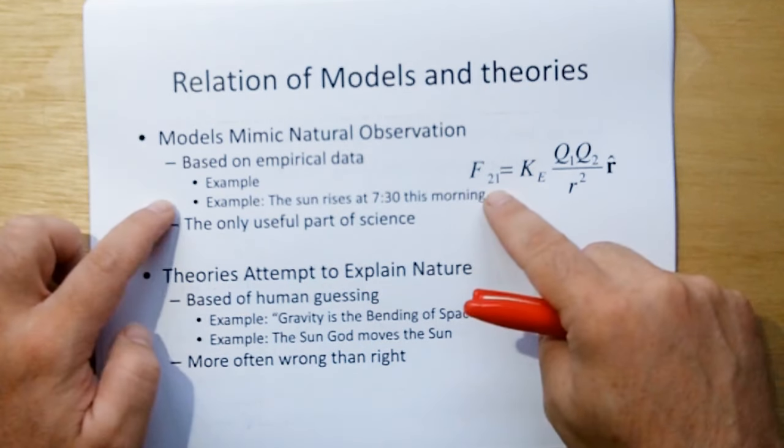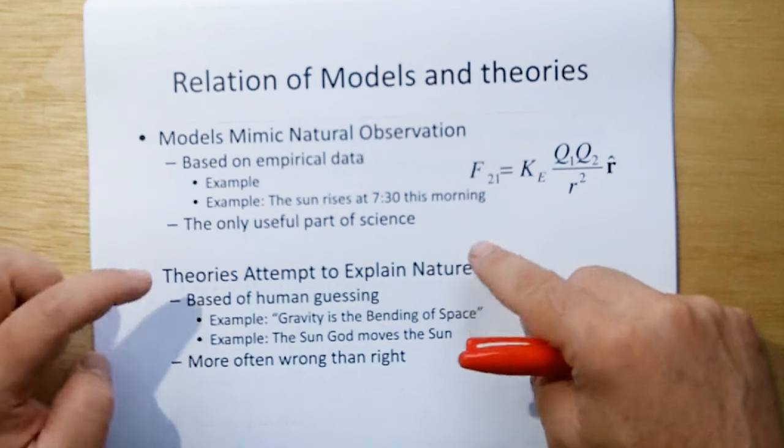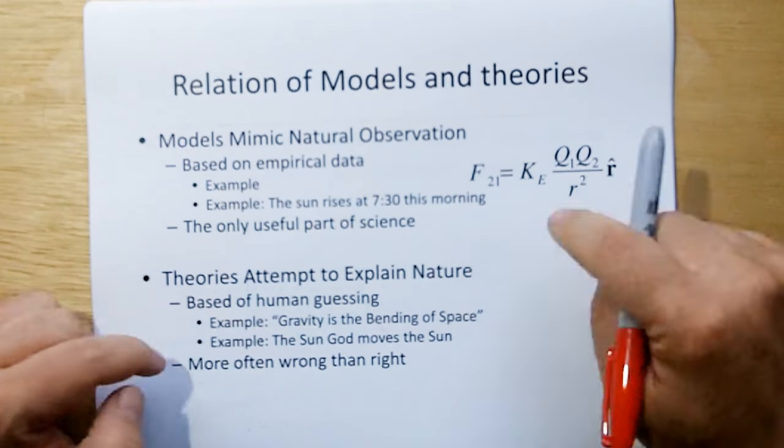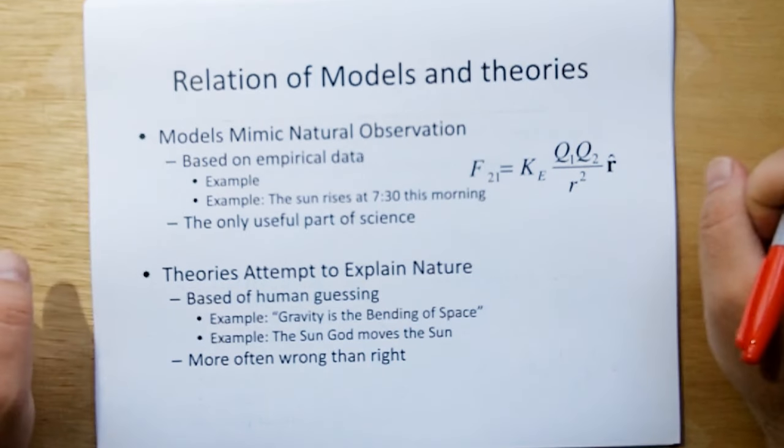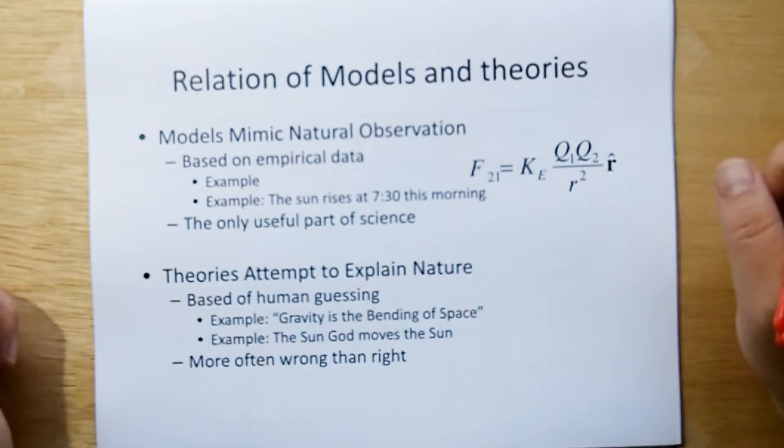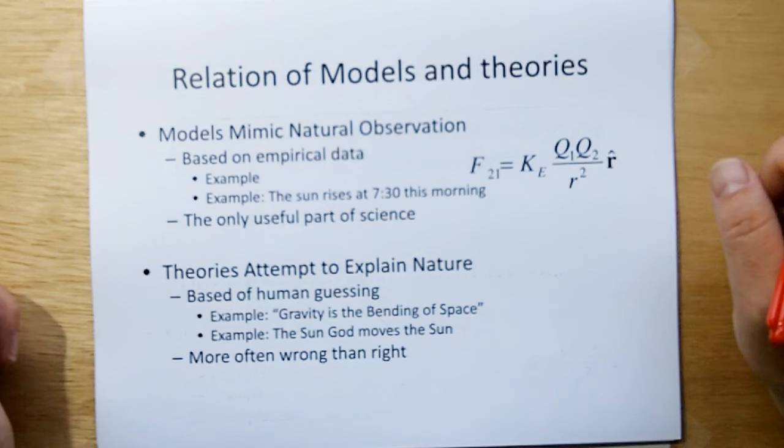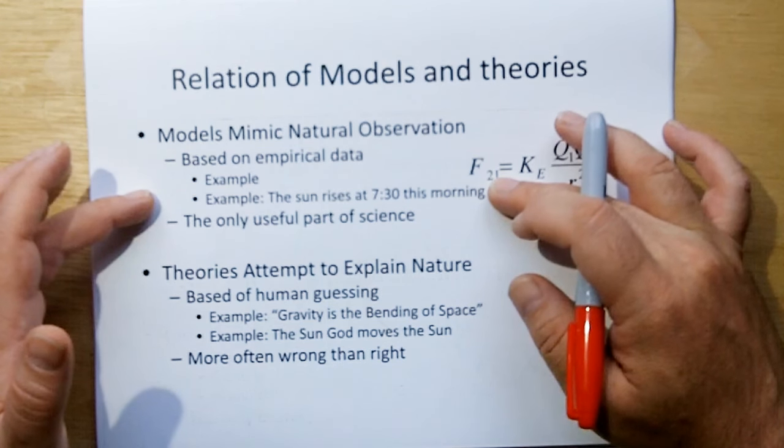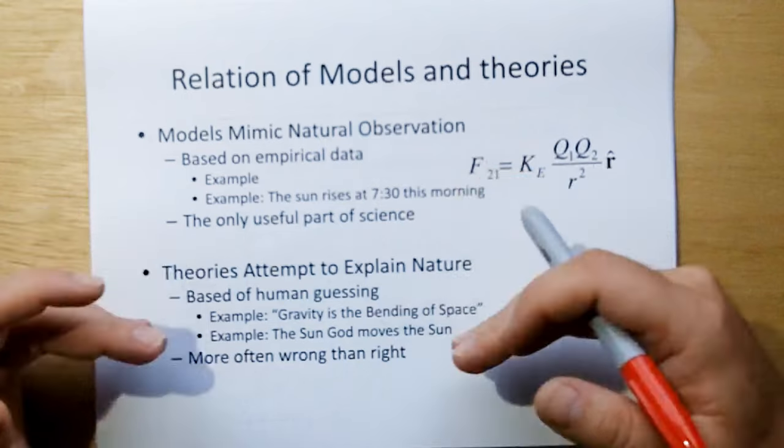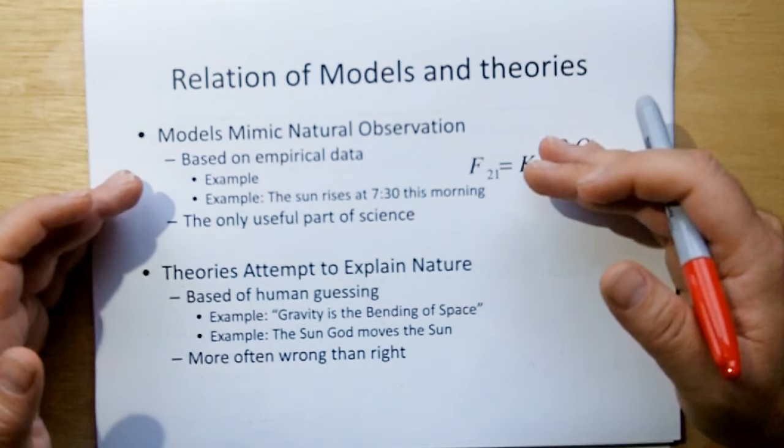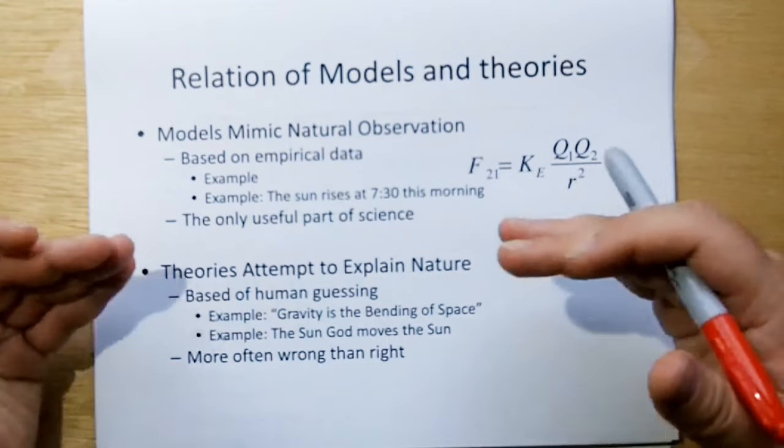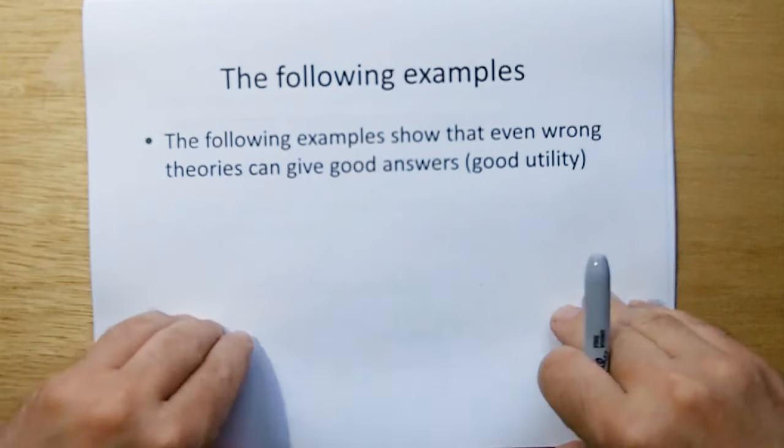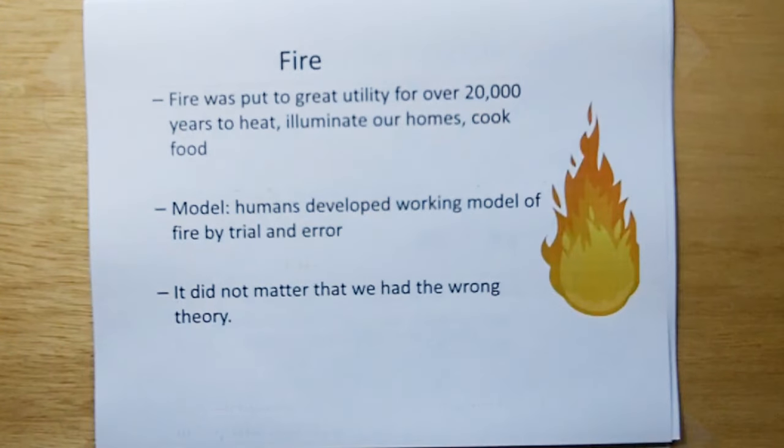For example, even though we have a model, a mathematical model for relativity, that should not be confused with the concept that what Einstein says, gravity is the bending of space. This is just a guess. The model, you could take the theory of relativity and come up with any number of different ways that gravity could be caused. So we need to separate theories from models. The sun god model is still useful. I mean, we still talk in terms of the sun rising and the sun setting as if it is the sun in motion.